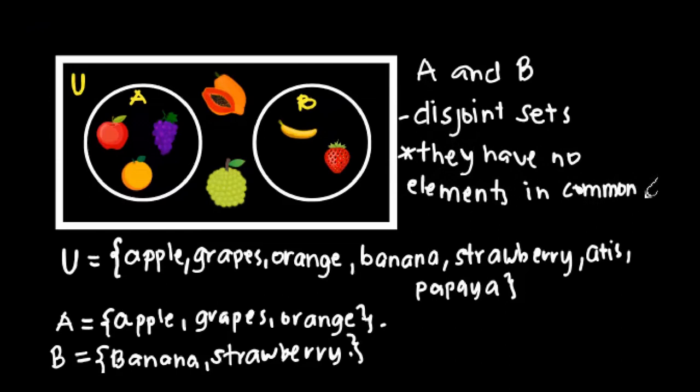If you look at the elements of A which are apple, grapes, orange, there are no elements from B. So there are no repeated elements. Therefore, they are called disjoint sets. From the illustration, the two sets are separate.